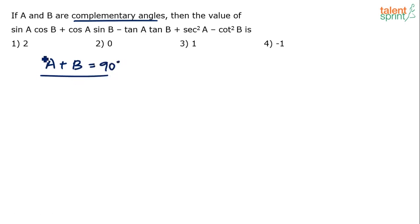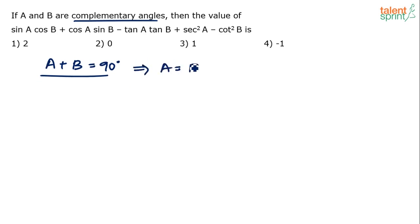Since sum of A and B is 90, and there is no other condition on A and B, we are free to choose any values within that constraint. So let A = 45 and B = 45. Since 45 plus 45 is 90, this satisfies the condition. Now substitute A = B = 45 into the expression.